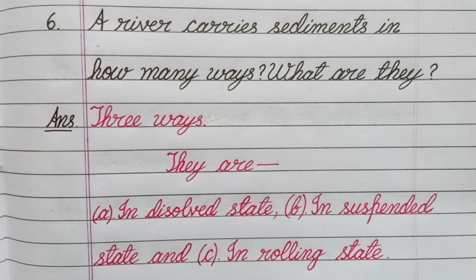Question number six: A river carries sediments in how many ways, and what are they? Answer: Three ways — they are in dissolved state, in suspended state, and in rolling state.